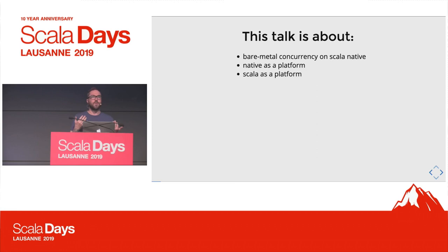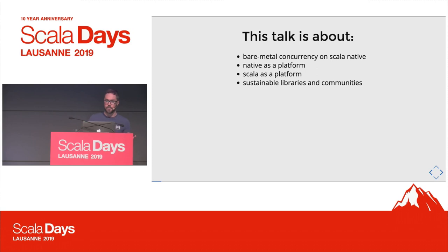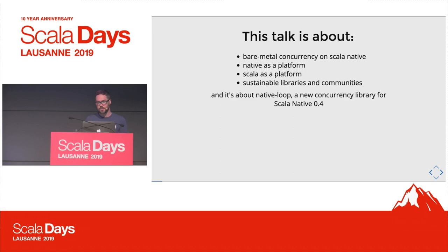Because this is a platform where you start off with less, it's really about Scala as a platform itself. If you're doing Scala all the way down to the OS level, you have nothing but Scala in your stack, which can be intimidating but also really exciting. It's especially about sustainable libraries and communities — how do we build enough functionality on this new platform to bootstrap a workable ecosystem where you can start using this in production? Concretely, this is a talk about Native Loop, the new concurrency library for Scala Native 0.4.